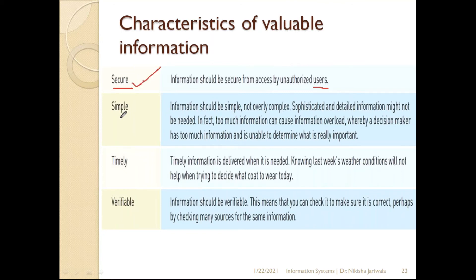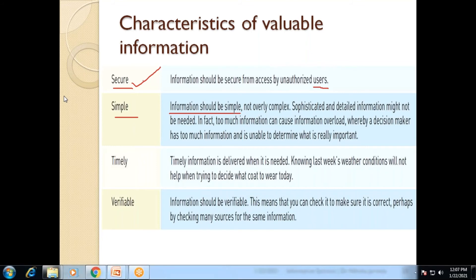The next characteristic is simple. Our information should be simple enough that any person can gain the details they need from it, make decisions based on it, and solve important problems quickly. If information is complex rather than simple, it takes a lot of time to grasp the details from it.